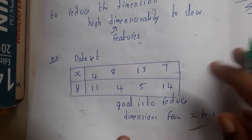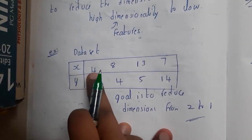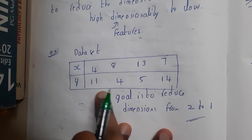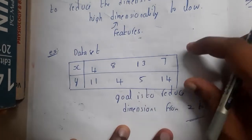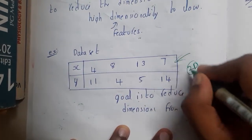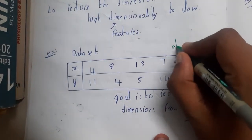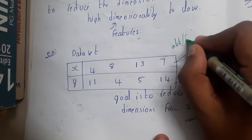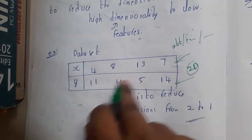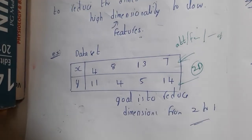The dataset will look like this: X has values 4, 8, 13, and 7; Y has values 11, 4, 5, 14. So here it is a 2D dataset having two attributes — first attribute and second attribute. Sometimes I might use the word attribute, sometimes feature, sometimes dimension — all of them represent the same thing.